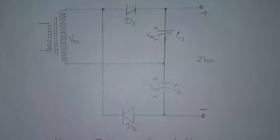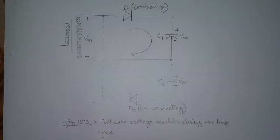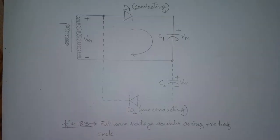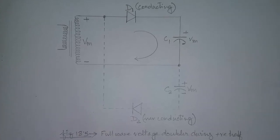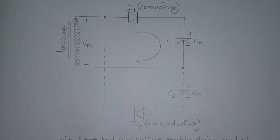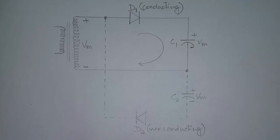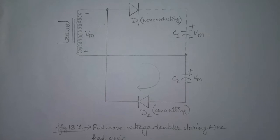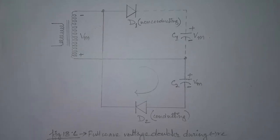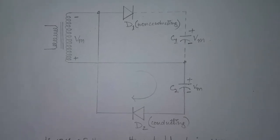During the positive half cycle of the transformer secondary voltage, diode D1 conducts, charging the capacitor C1 to peak voltage Vm, while D2 is non-conducting at this time. Now, during the negative half cycle, diode D2 conducts charging C2 to a peak voltage Vm, and D1 is non-conducting.